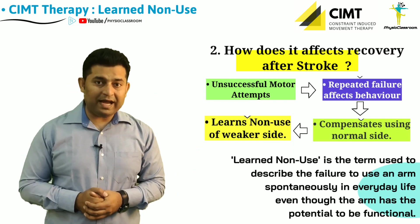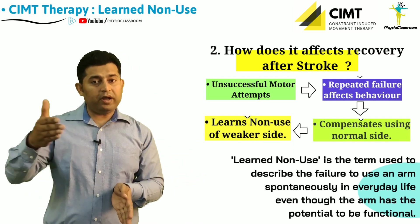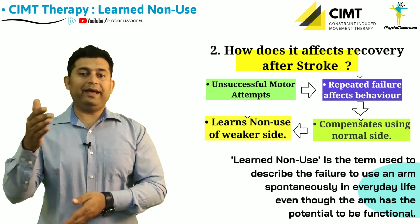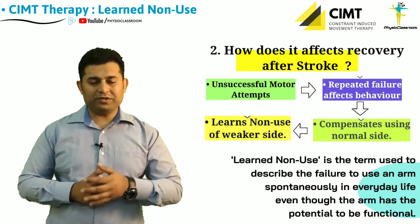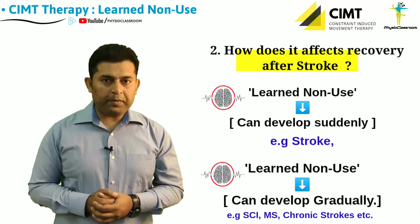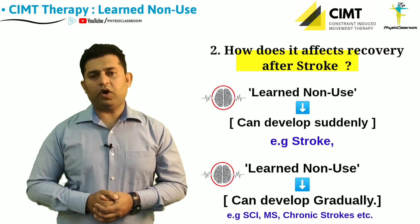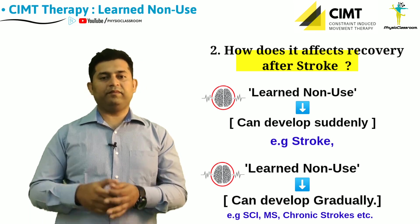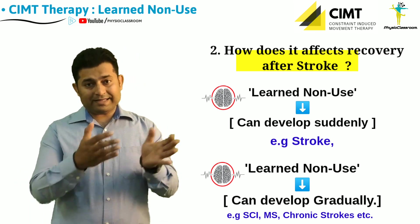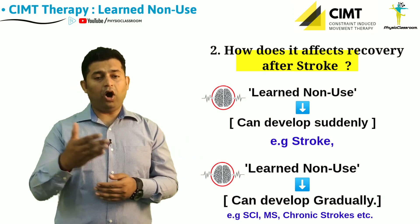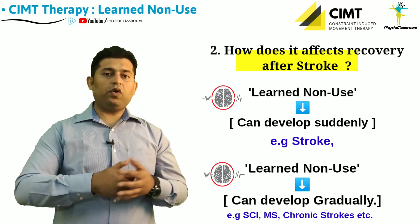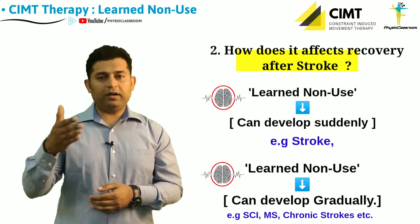Another important point regarding learned non-use is that it can develop either suddenly or rapidly, such as in acute stroke, or it can also develop over a period of time gradually.